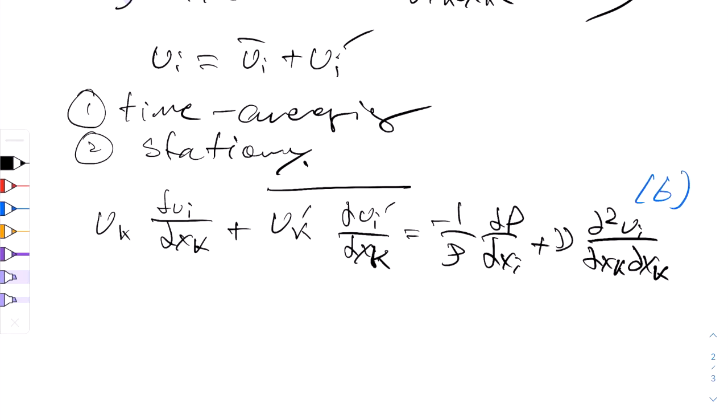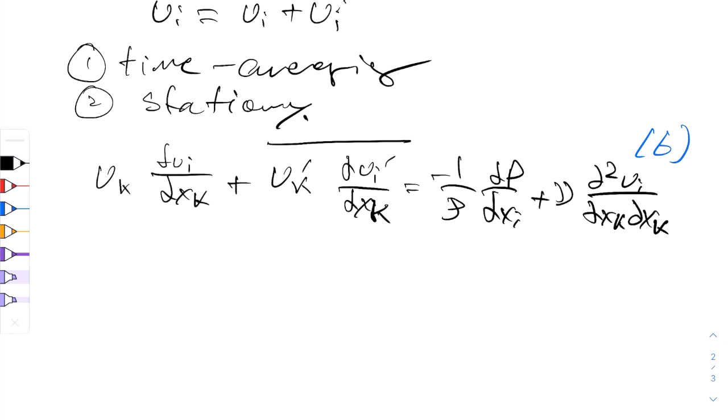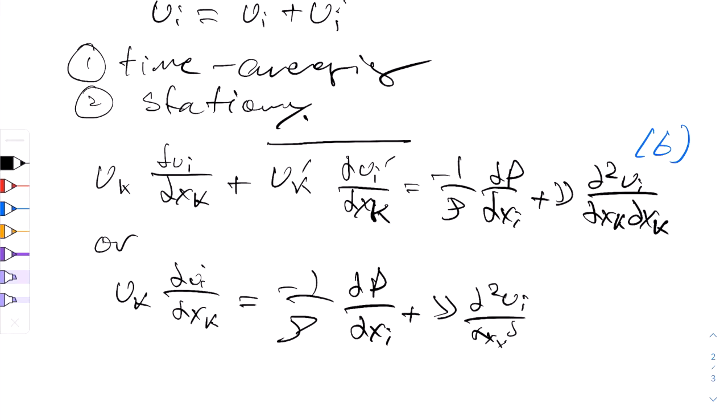We can also rewrite this in a slightly different way. We can write it as uk partial ui partial xk is equal to negative 1 over rho partial p partial xi plus the viscous term partial 2 ui partial xk partial xk minus the average term barred uk prime partial ui prime partial xk. And we'll call this equation 7.